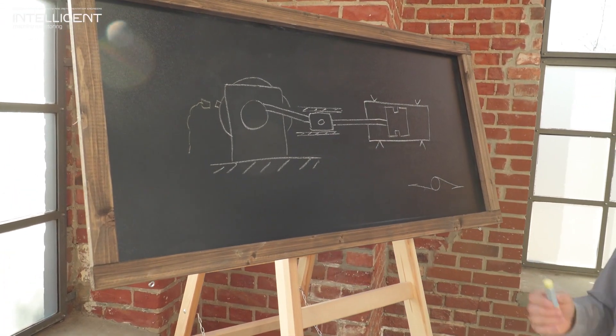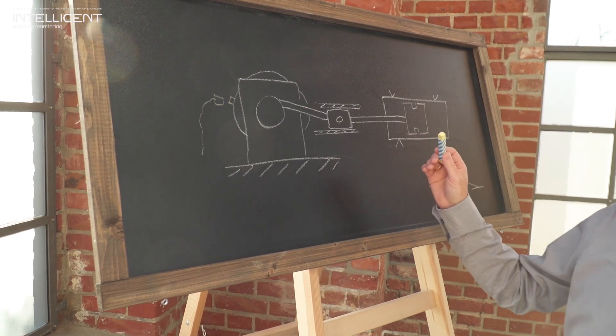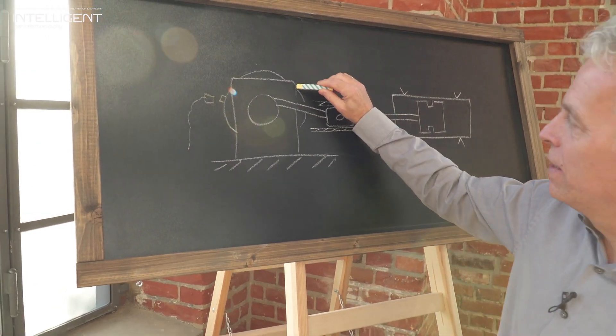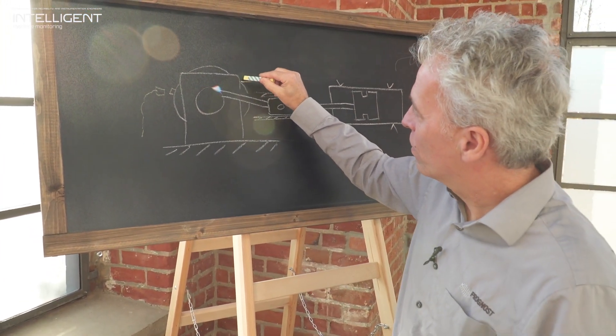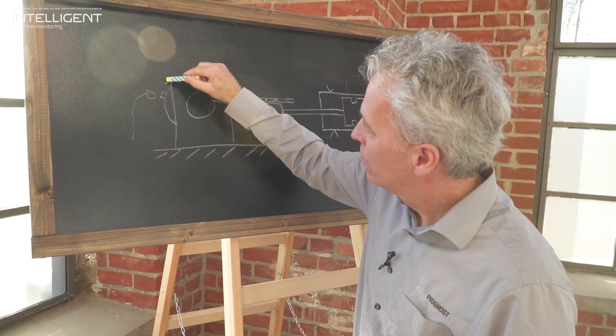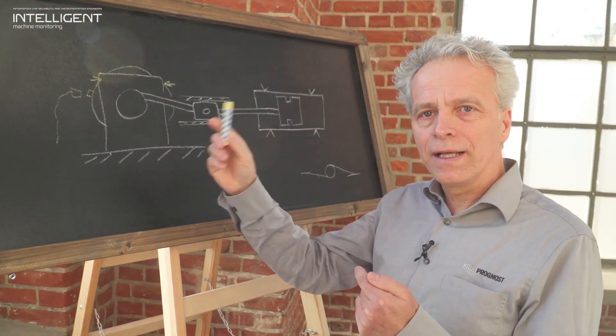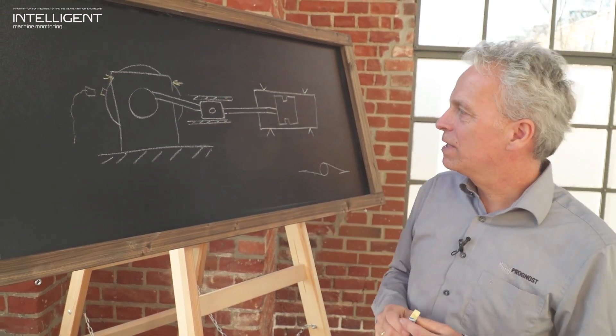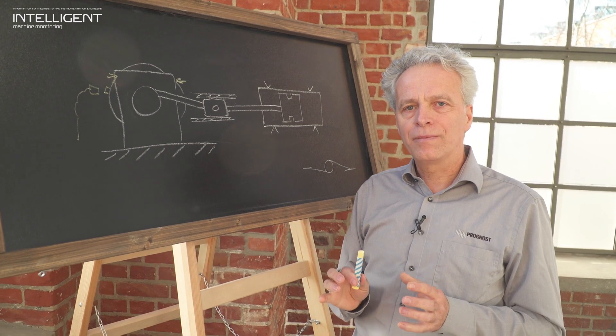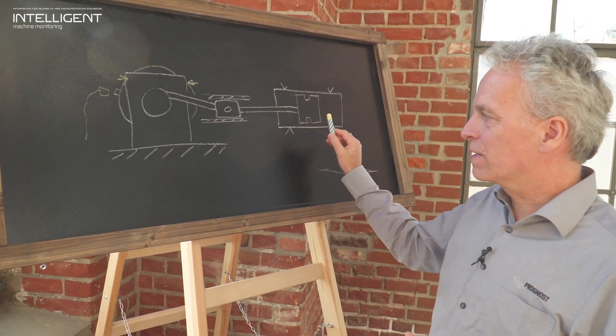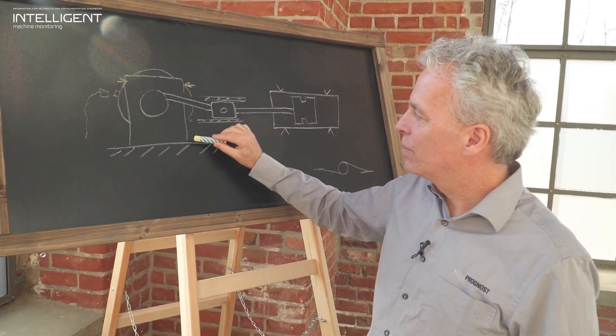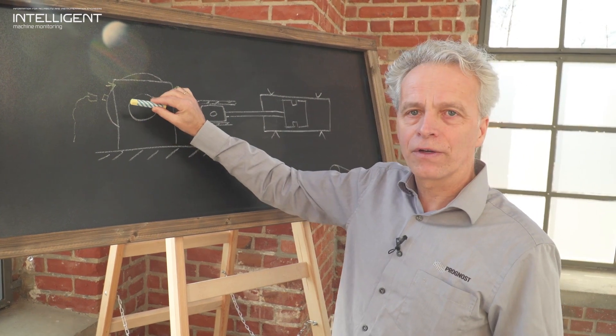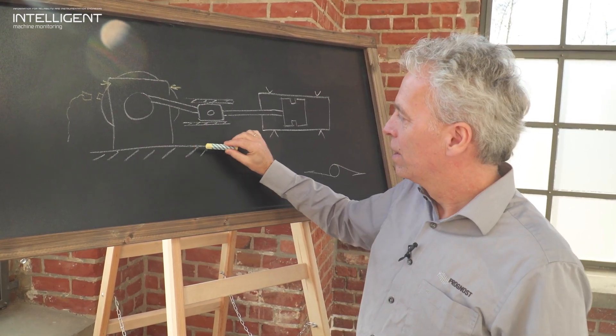According to the API we can install velocity sensors at the crankcase here in the horizontal orientation, one at the drive side, one at the non-drive side. With these velocity sensors we can detect for example unbalances of the whole compressor, loose mechanical connections of the crankcase to the foundation, or even cracks in the foundation.